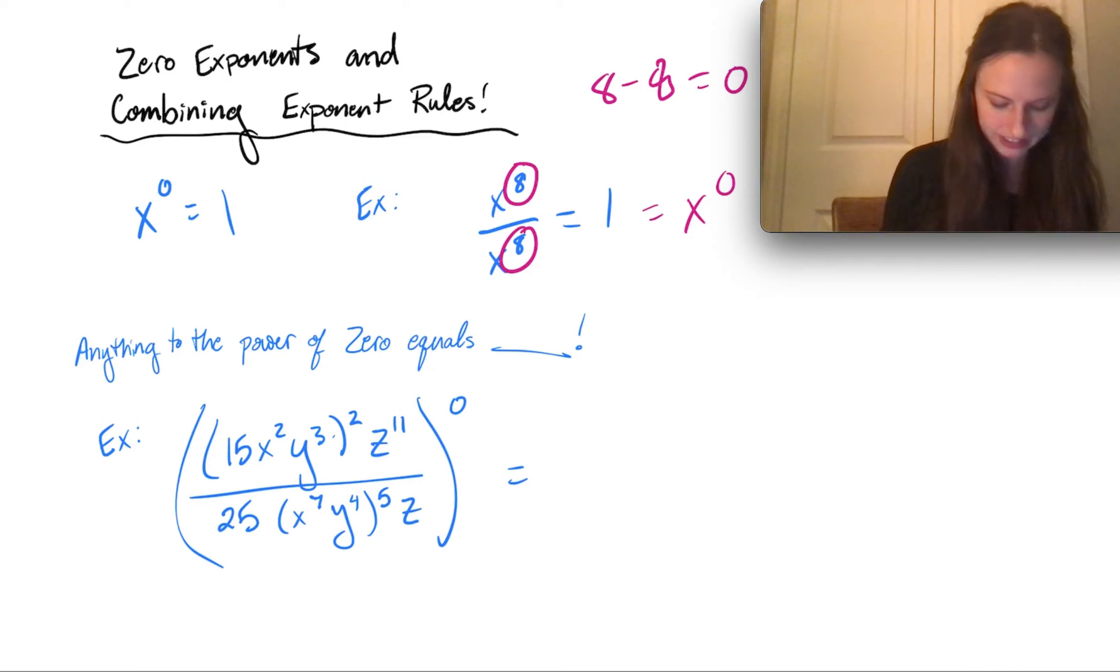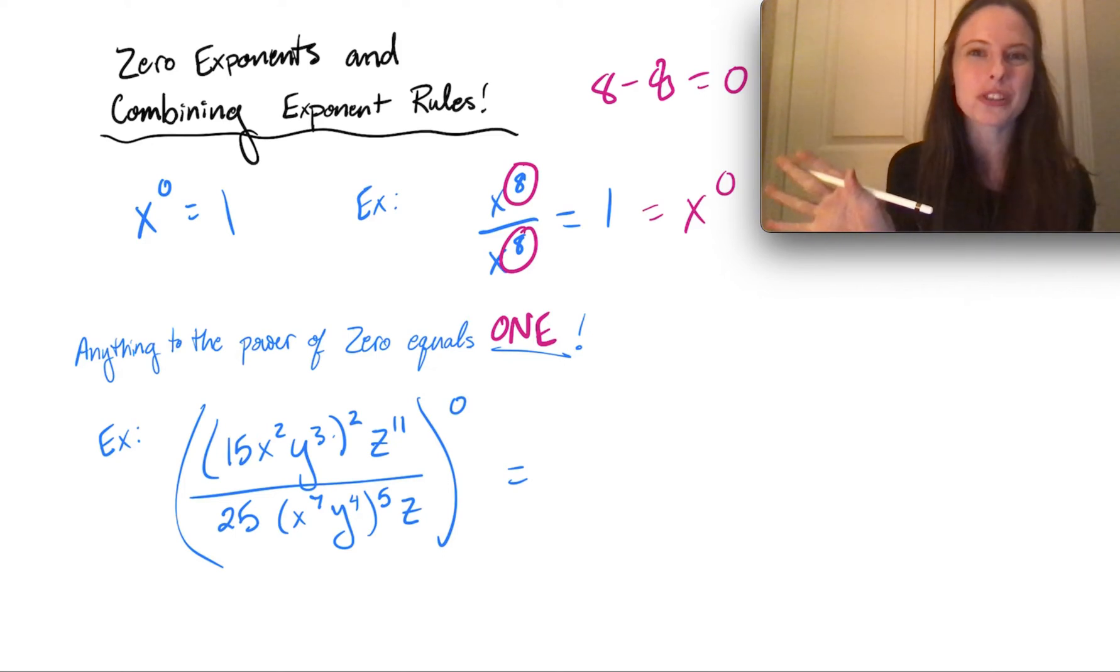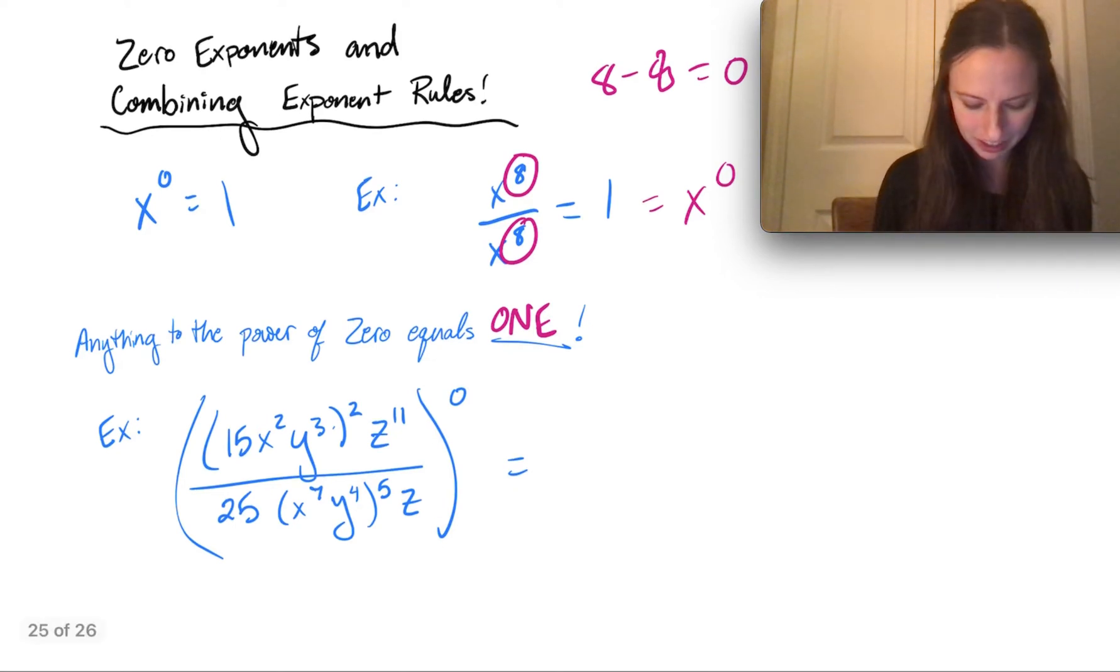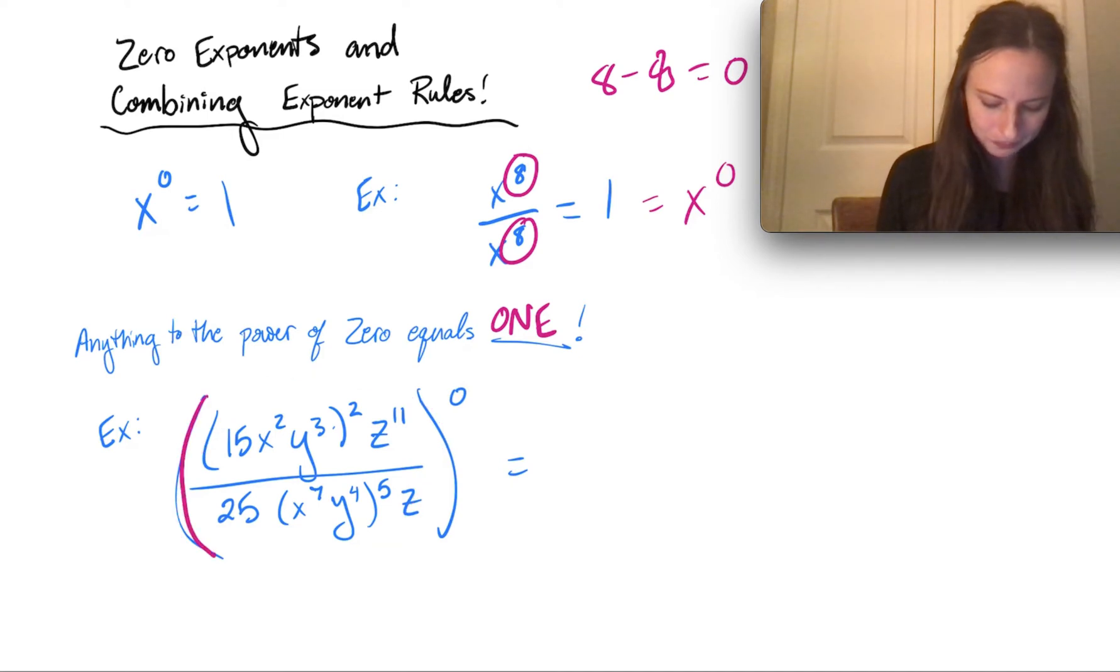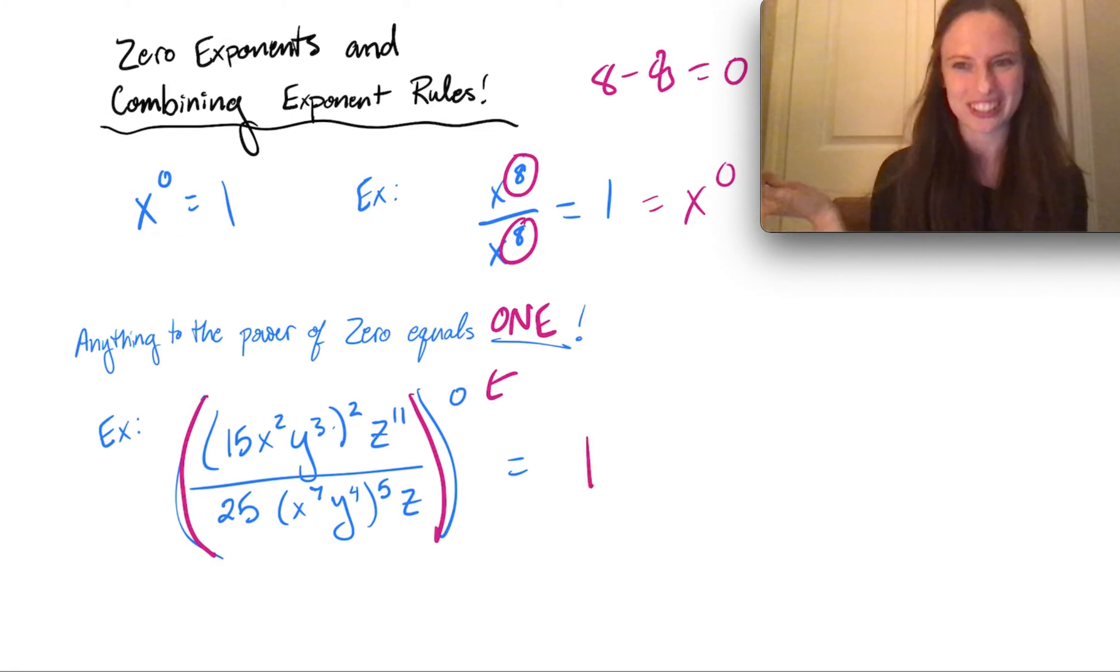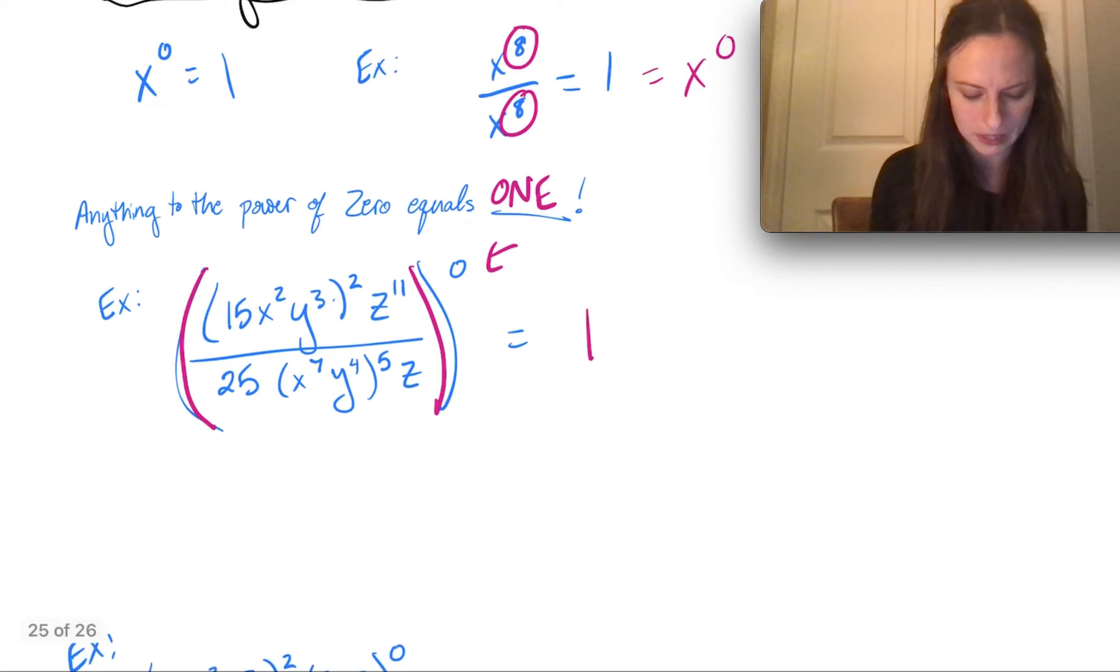So now that we've established anything to the power of 0 equals 1, this applies even to the most complicated problems. So you see down here, we've got all these different variables, all these different exponents, but the whole problem is raised to the 0 power. So no matter how crazy it gets inside those parentheses, because it's all raised to the 0 power, this whole thing still just equals 1. So that's kind of nice. Anytime you see a super complicated problem, if there are any zeros in there, that's actually good news, because anything with that 0 exponent becomes a 1.